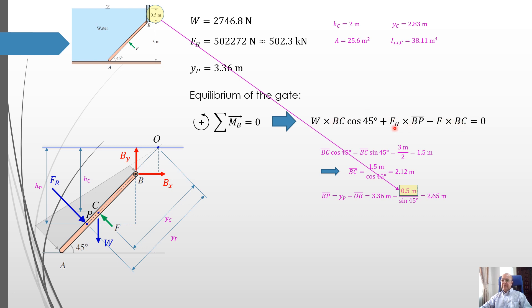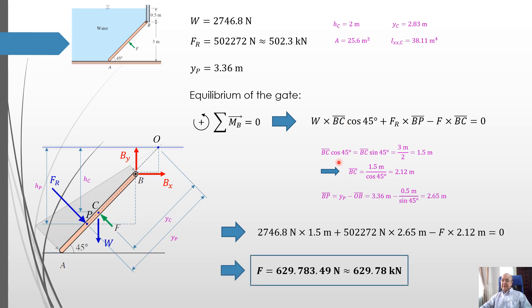The only thing that we don't know is F. So we put all the values into this equation. We rearrange to calculate to obtain F. And we obtain the force F equals 629.78 kN. Again, this force is much bigger than the weight of the gate. So mainly this force is due to this water pressure. So with this we solve the problem.